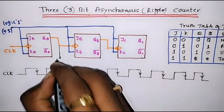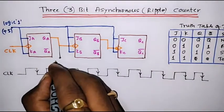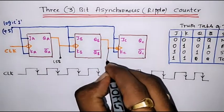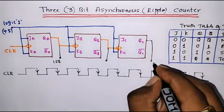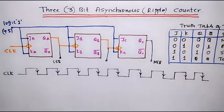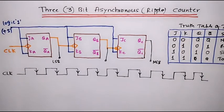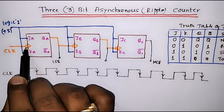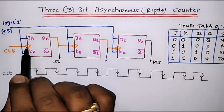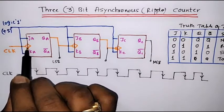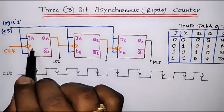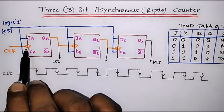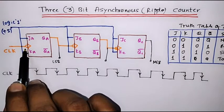The output of the first flip-flop is QA, which is the LSB. The final output is QC, which is the MSB. Here, I have shown the bubble input — this bubble indicates the flip-flop is active for the falling edge of the clock. If the bubble is not shown, it indicates the flip-flop is active for the rising edge of the clock.